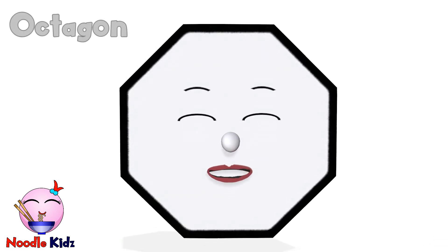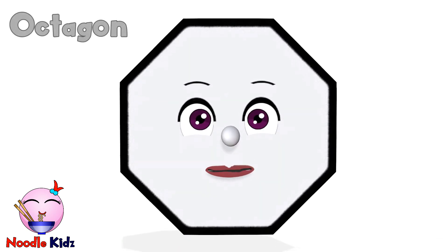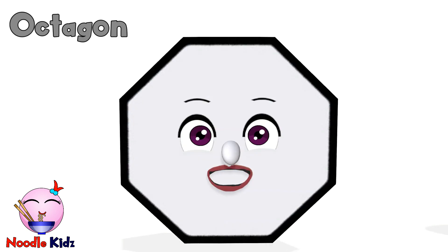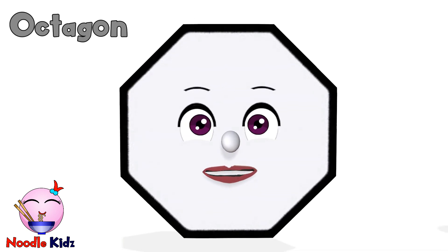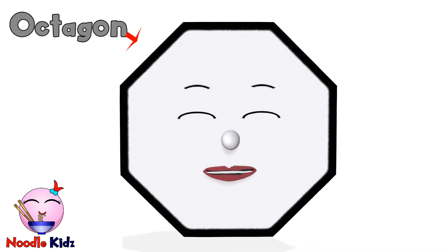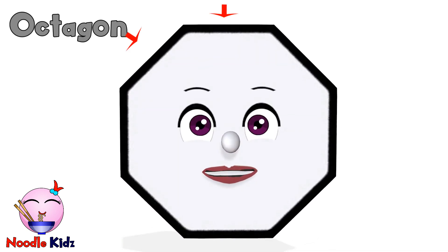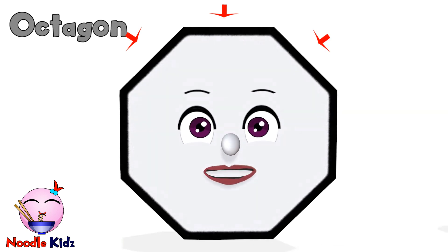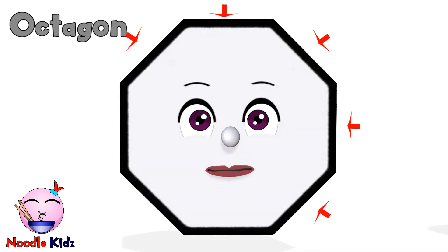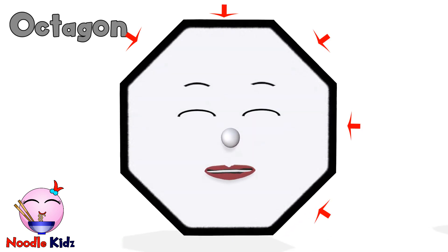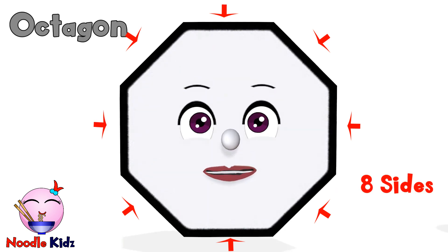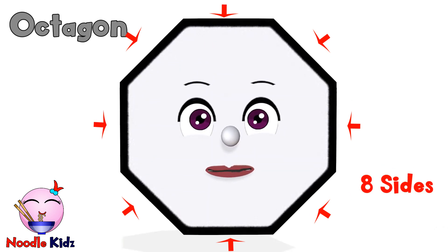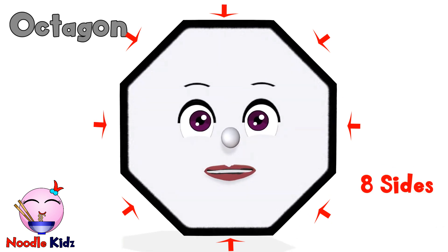My name is Octagon. I have 8 sides. You don't believe me? Let's count together then: 1, 2, 3, 4, 5, 6, 7, 8. Yep, I have 8 sides.